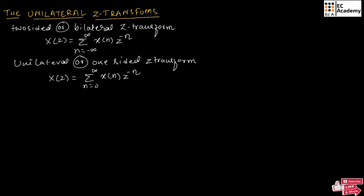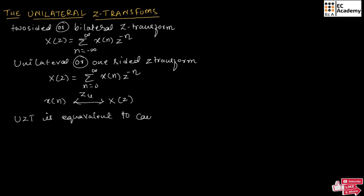We can say that the summation in unilateral or one-sided Z transform is carried out only for positive values of n, or non-negative values of n, since the summation is ranging from 0 to infinity. We can represent the unilateral Z transform of X of n as X of Z. Here, we can say the unilateral Z transform is equivalent to a causal signal, since the summation is ranging from 0 to infinity.